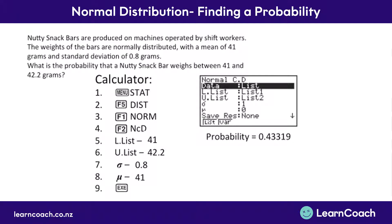That is going to give us an answer. In this case it's 0.43319. Your calculator will show a whole list of different things, but you only need to look for the one that says probability equals and gives you your answer. In actual fact, 43.319% of nutty snack bars weigh between 41 and 42.2 grams. But for your question you just need to write down the number your calculator has given you.